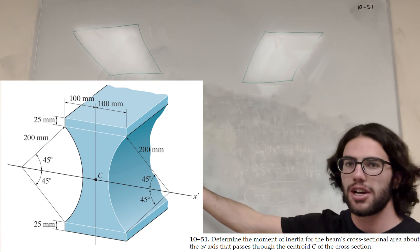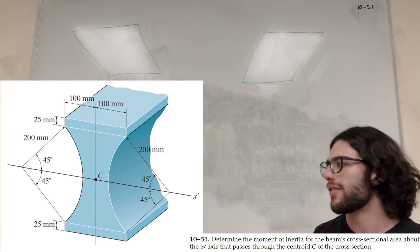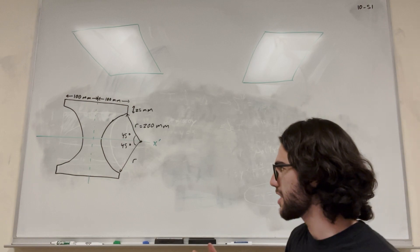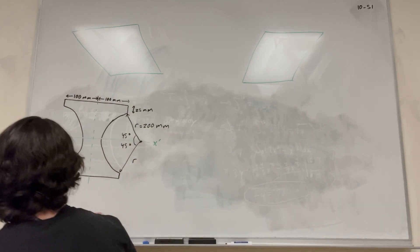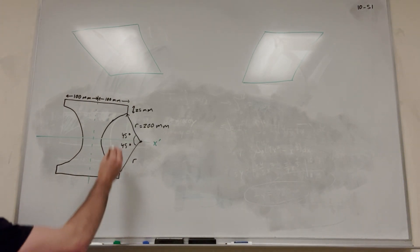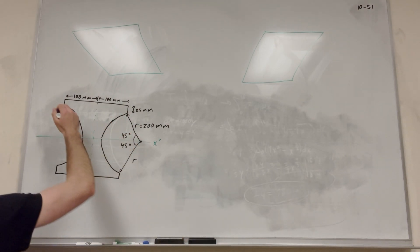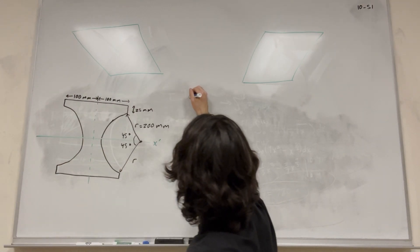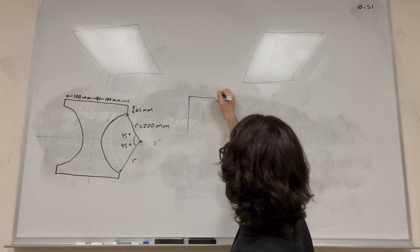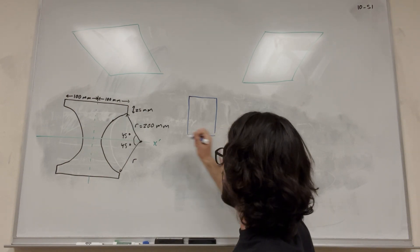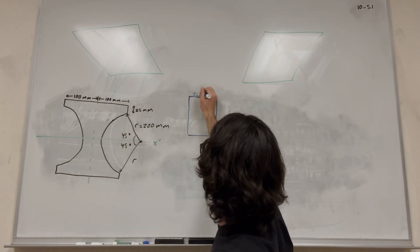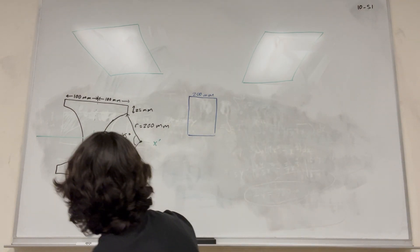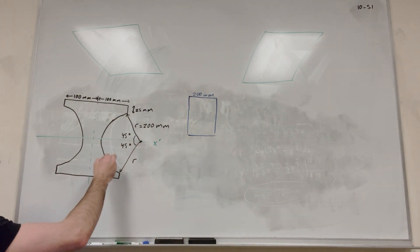So what we want to do is we have this pretty complex shape, and when we have a complex shape, we want to break it up into simple shapes that we know how to do. So let's find some simple shapes in here. Our first simple shape is going to be this entire rectangle, and then our next shapes maybe could be these circles — circles that are cut out.